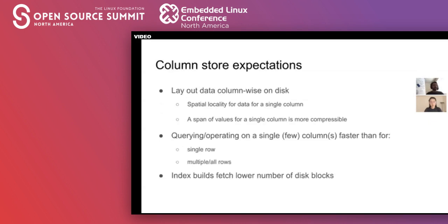Let's lay down some expectations for a column store in general. Whenever you think about a column store in database land, you usually refer to laying out the data for a column physically on disk together. You expect a high degree of spatial locality for data belonging to the same column because of the layout. This kind of data is much more compressible than data stored row-wise. Whenever you think column store, you typically always think about compressibility.